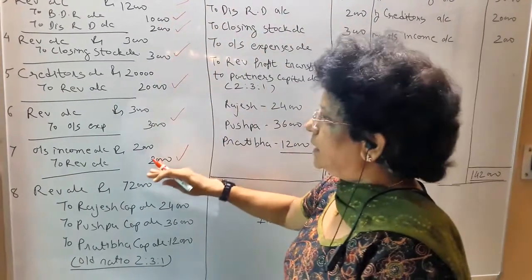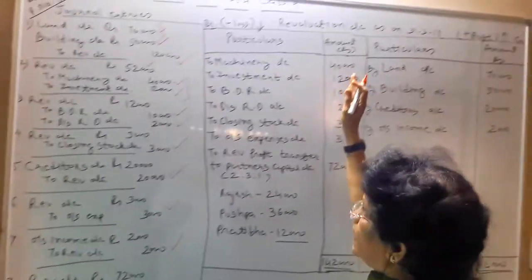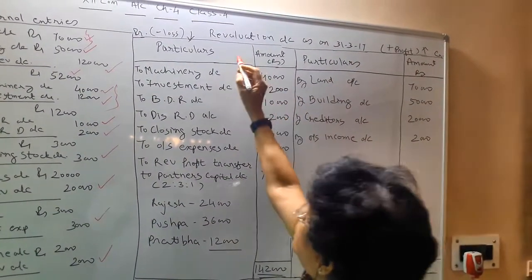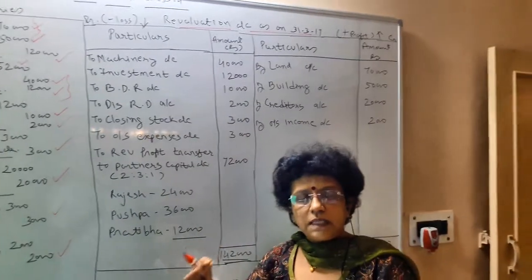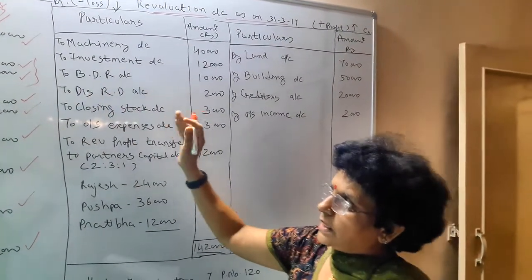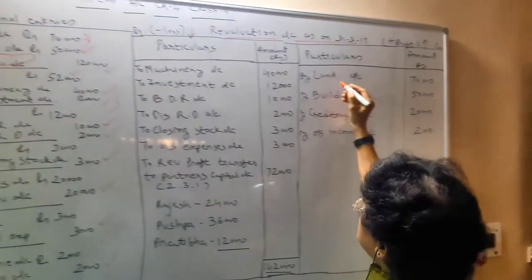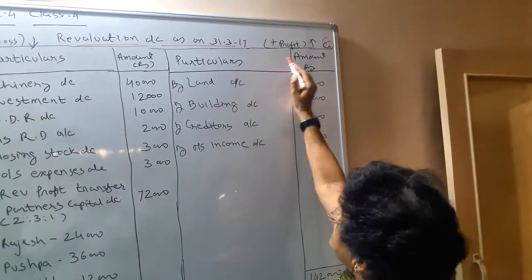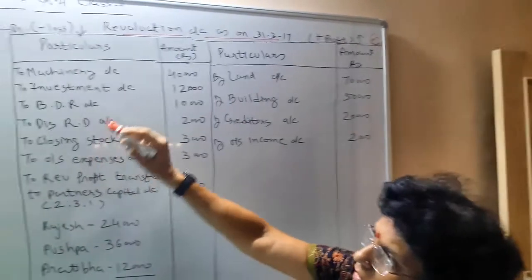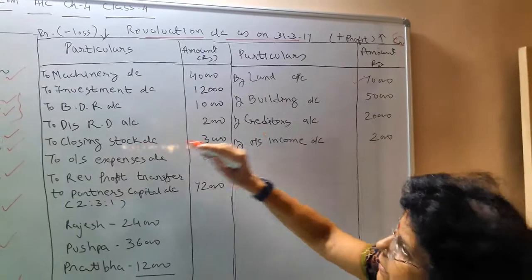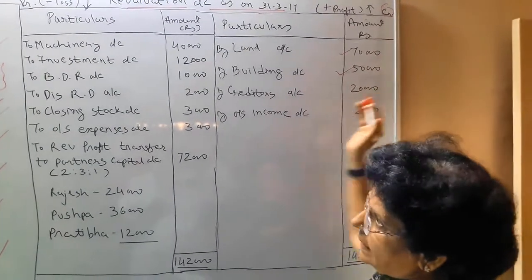Now with all these journal entries, remember last year we learned ledger posting — based on that we are now preparing our revaluation account. This account is also known as the profit and loss adjustment account. See what revaluation effect is given. Here revaluation is credited, so go to the credit side of the revaluation account. The credit side means profit, a gain, or a rise in the value of your asset. So the first entry: land value increase by 70,000; then building value increase by 50,000. These two are the gain, so they come on the credit side.